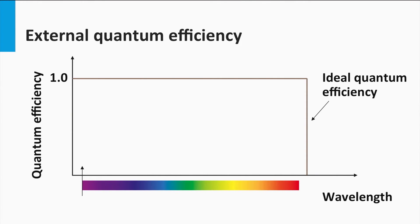Let's say we have a material with bandgap E_gap. The ideal external quantum efficiency would look like this graph. Note that the horizontal axis is plotted in wavelength. Smaller wavelengths correspond to higher energetic photons — the blue spectral part. Longer wavelengths correspond to lower energetic photons — the red spectral part. Above the bandgap, all photons result in a collected electron, or in other words the EQE is 1 or 100%. In reality, the EQE is always smaller than 100% and its value varies with wavelength.